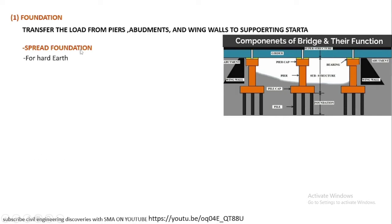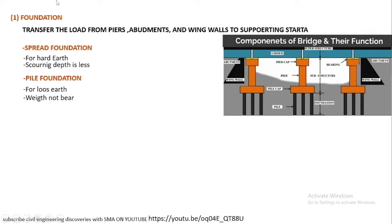Spread foundation is used in areas where the earth is hard and the scouring depth is less. Pile foundation is used in areas where the earth is loose and cannot bear the weight of the structure. In those locations we use pile foundation to transfer the load of the pier to depth in the earth through the piles.